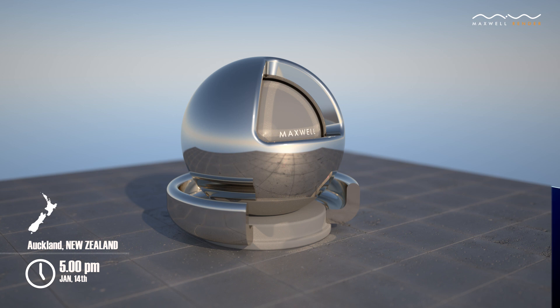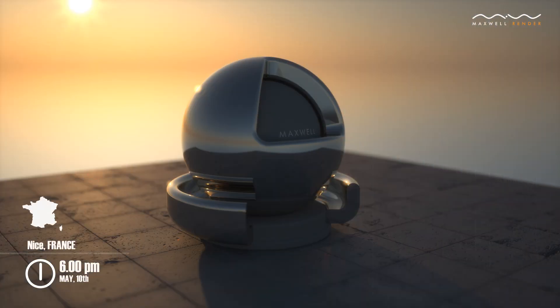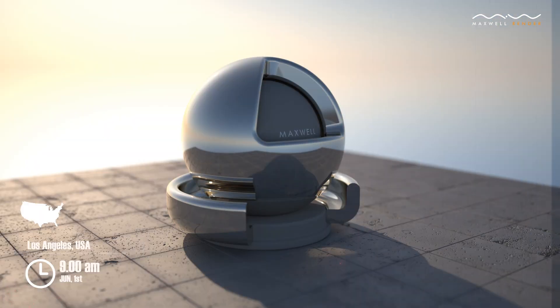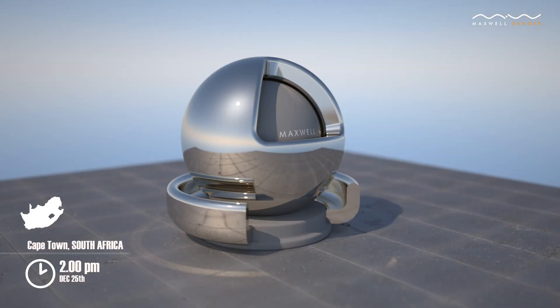Maxwell Render provides a complete physical sky system with a sophisticated atmosphere model that reproduces skylight conditions at different hours, dates, and locations. The physical sky system is a simple way to obtain extremely accurate lighting in your scenes.